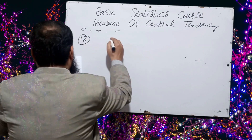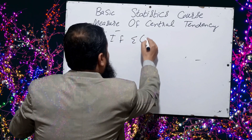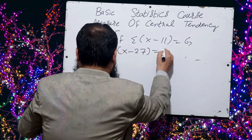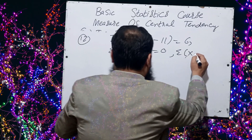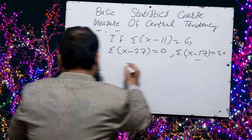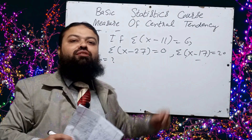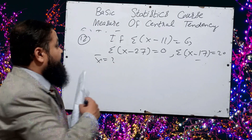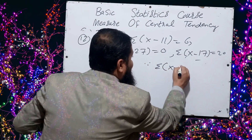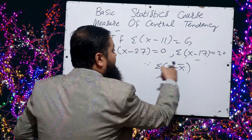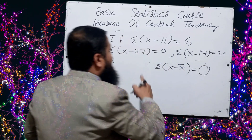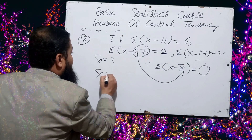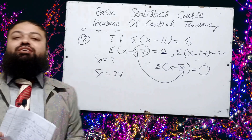Question number twelve: for a certain distribution, if summation of (x minus 11) equals 6, summation of (x minus 27) equals 0, and summation of (x minus 17) equals 20, what is the value of x-bar? We know the property of mean: the sum of deviations from the mean is always equal to zero. The expression that equals zero tells us x-bar equals 27 — that is the correct option.